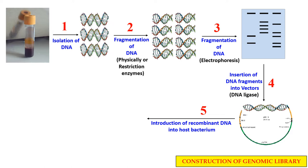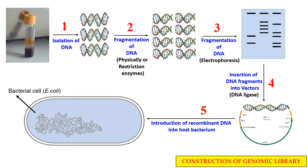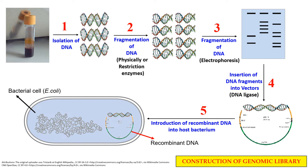The next step is the introduction of this recombinant DNA. It is called recombinant because it now contains two different DNA molecules — one is the genomic DNA of the organism for which you want to make the genomic library, and the other is the vector DNA. So in the next step this recombinant DNA is transferred into the host — here we are taking the example of bacteria, such as E. coli. Each bacterial cell now contains a fragment of the recombinant DNA. Similarly, you make many bacterial colonies in which different fragments of the genomic DNA have been introduced, and each cell contains a different fragment. Ultimately this collection of colonies comprises the total genomic DNA of that particular organism.